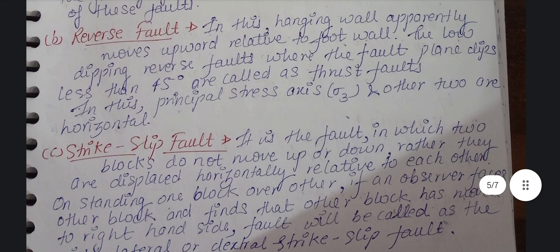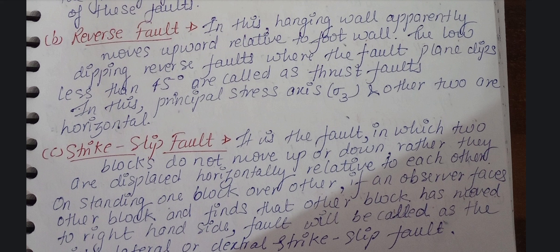Let's move on to reverse fault. In a reverse fault, the hanging wall apparently moves up with respect to the footwall. The low-dipping reverse fault, where the fault plane dips less than 45 degrees, is called a thrust fault. In reverse faults, the minimum principal stress sigma 3 is vertical and the other two are horizontal.